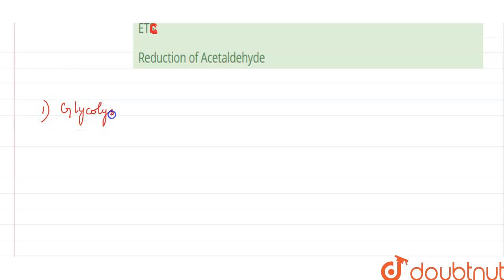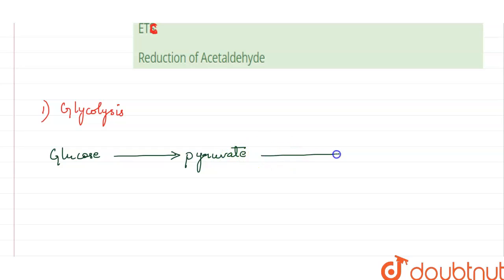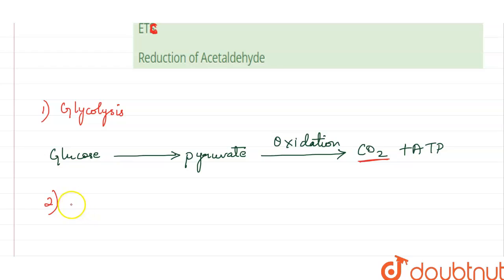First, the process of glycolysis. In this process, glucose, which is a 6-carbon compound, is converted to pyruvate. This pyruvate will enter into the citric acid cycle, where it will release carbon dioxide by oxidation, and ATP will be produced as a result. So glycolysis is a process that releases carbon dioxide.